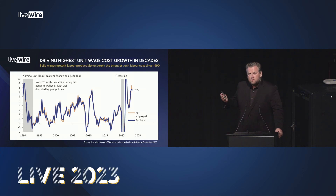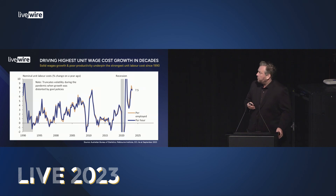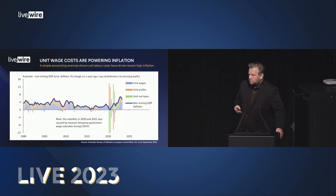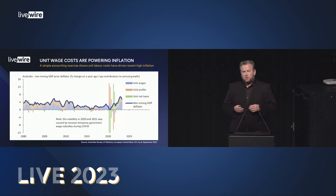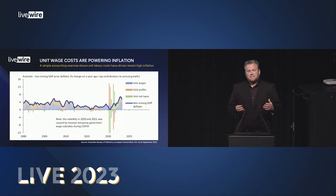The only way to really change it is through a massive increase in unemployment. When we decompose Aussie inflation, we find that the culprit is indeed these unit wage costs.